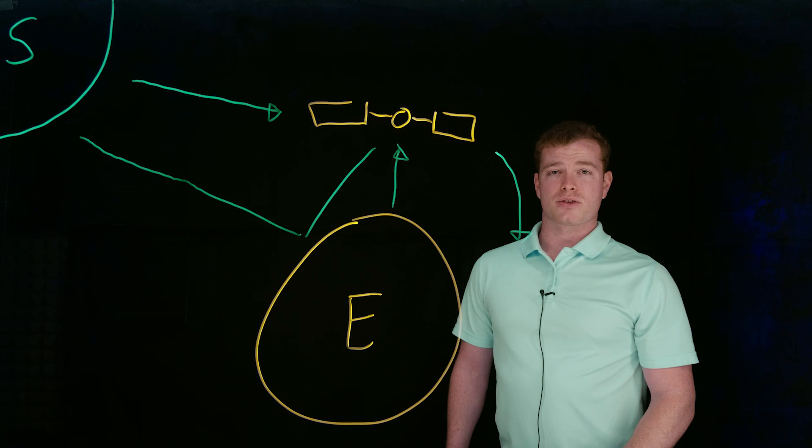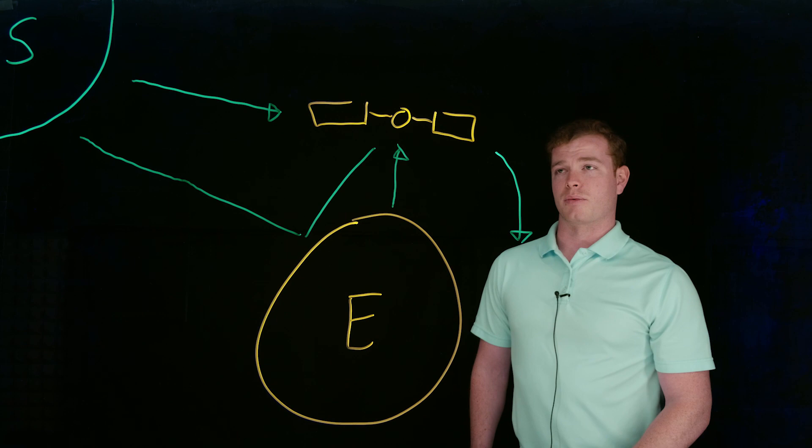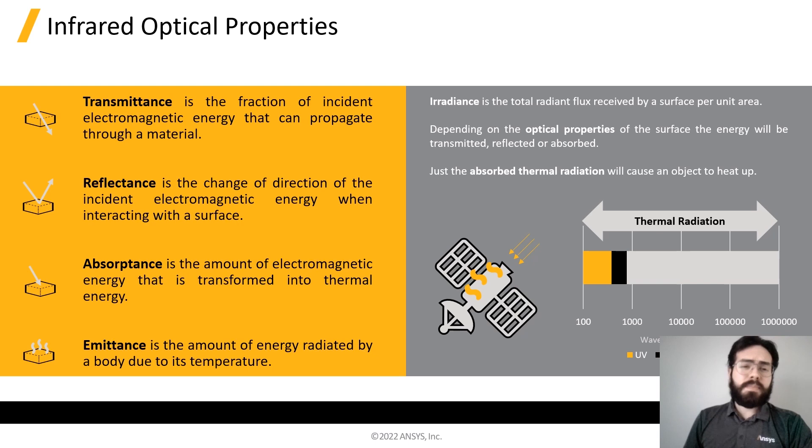Then we'll pass that information to SPEOS, which will do the actual ray tracing and use our system's optical properties to determine the final radiation. This will be passed to Mechanical, which will determine the final thermal load on our satellite.